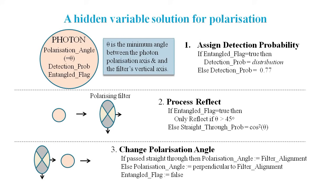First, let's consider the case of normal non-entangled photons going through normal polarized filters. The detection probability will always be set to 0.77. If it's reflected or not will be determined by a pseudo-random number tested against a cosine squared operation. If it passes through, then we set the polarization angle to be equal to the filter's alignment.